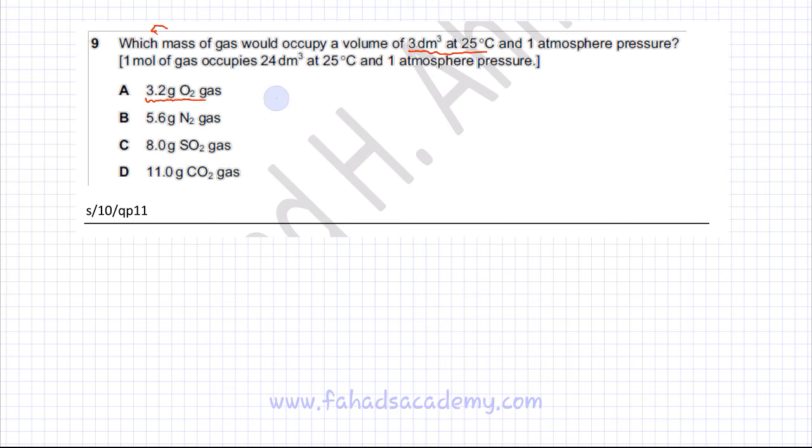Let's look at option A first. You have 3.2 grams of O2. So we can find the moles of O2, which would be the mass, 3.2, divided by the molar mass of O2, which has two oxygens. So that's 16 plus 16, which is 32. This comes out to be equal to 0.1 mole.